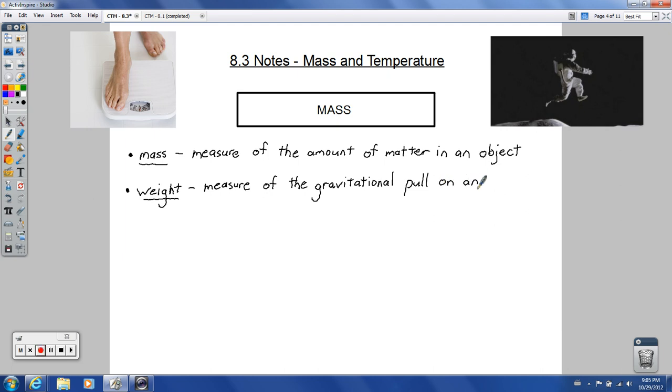Mass is the measure of the amount of matter in an object. So this is based atomically or molecularly in terms of how many molecules are there, how much mass do these molecules have. Mass and weight are different things. Weight is dependent on gravity. Weight is the measure of the gravitational pull on an object.